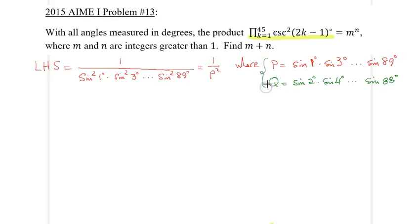So therefore if I compute the product, the product of P and Q, that would be equal to the whole thing, so sine 1 degrees, sine 2 degrees, and so on, all the way to sine 88 degrees times sine 89 degrees, and then we can do the following.